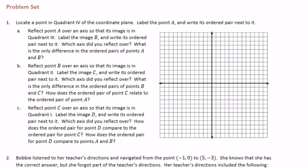Sixth grade module 3 lesson 16 problem set number one: locate a point in quadrant 4 of the coordinate plane, label the point A, and write its ordered pair next to it. Quadrant 4 is in the lower right — quadrants go counterclockwise: 1, 2, 3, 4. I'll pick this point right here. Counting across: one, two, three, four, five, six, seven, and then down one, two, three — so this is point (7, -3).